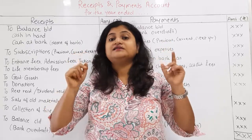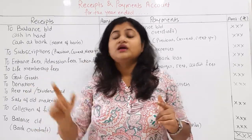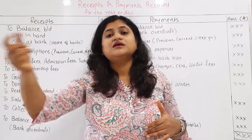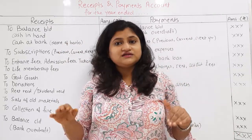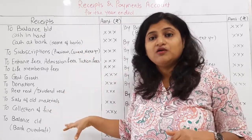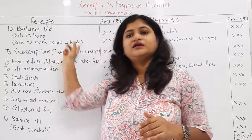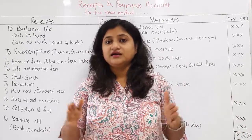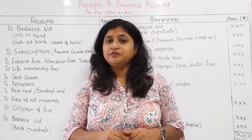Income and expenditure account only records current year items, whereas receipt and payment account records all cash transactions — only cash receipts and cash payments are recorded here. All concepts should be clear so that practical problems can be easily solved.